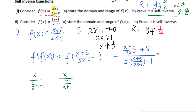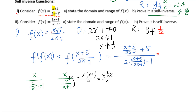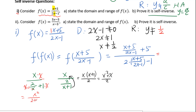We now simplify these complex fractions. For the denominator, we cannot make it jump directly to the top — we must get rid of it by multiplying every single term through. Using the distributive property, we multiply through by 2x minus 1 to clear the compound denominator.